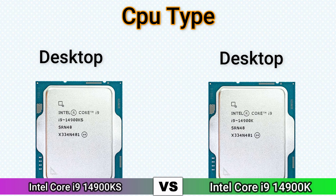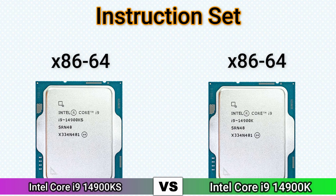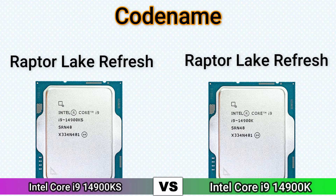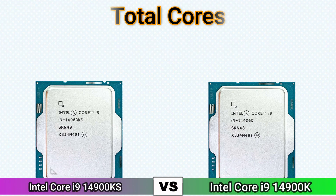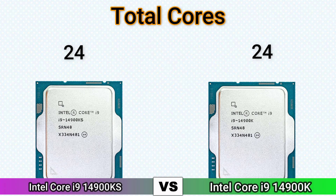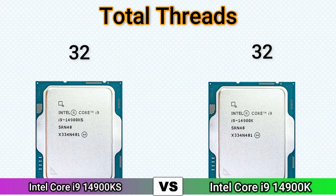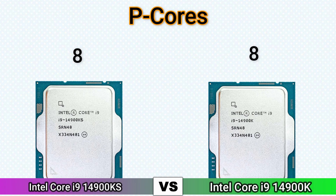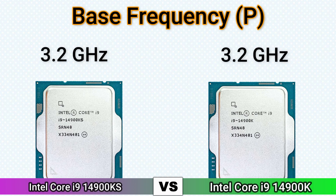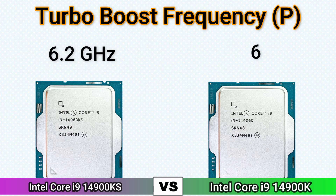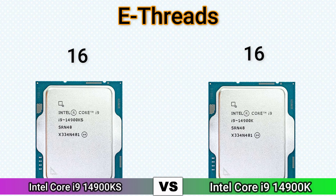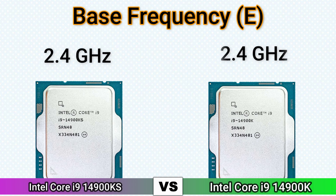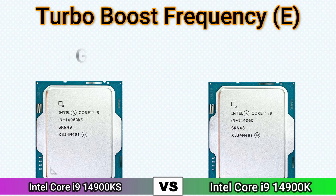CPU type, instruction set, codename, integrated GPU. Total cores, total threads. Performance core base frequency, performance turbo boost frequency. Efficiency core, efficiency threads, base frequency efficiency, turbo boost frequency efficiency.